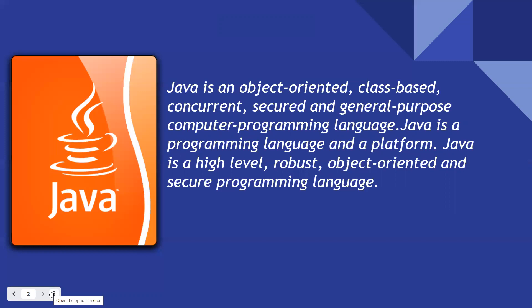Java is a programming language and a platform — this is an important point to note. You can use Java as a programming language, or you can use the Java JRE in your system just as a platform for other applications developed in Java. Java is a high-level, robust, object-oriented, and secure programming language.